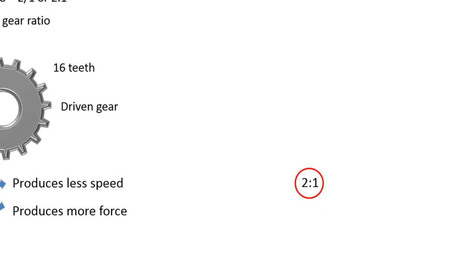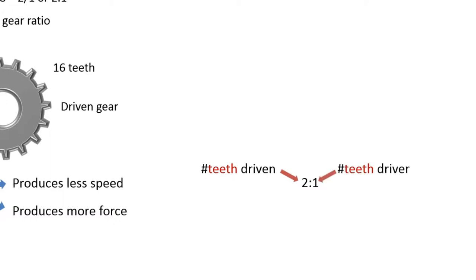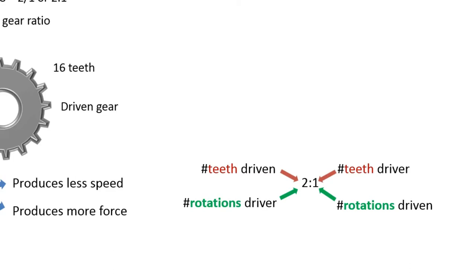Let's look at this 2 to 1 ratio again, because it can be looked at in two different ways: in terms of number of teeth, or in terms of number of rotations. The first number refers to how many teeth the driven gear has compared to the driver, so the driven has two times the number of teeth as the driver. But this ratio also tells us the relative number of rotations. The first number always refers to the driver rotations, and the second to the number of driven rotations. Thus the driver rotates two times more, or two times faster, than the driven.